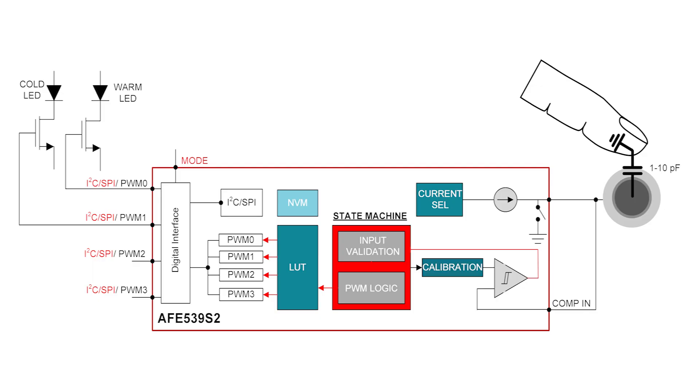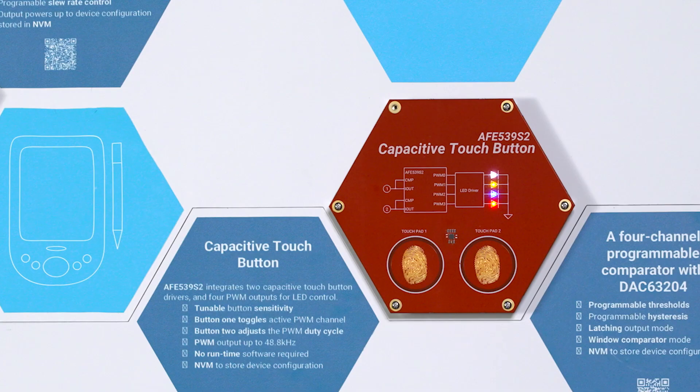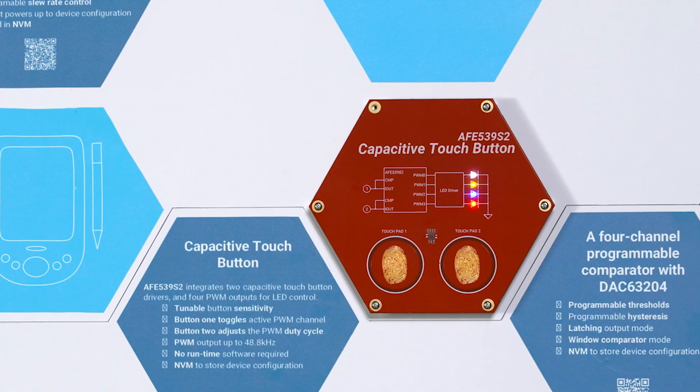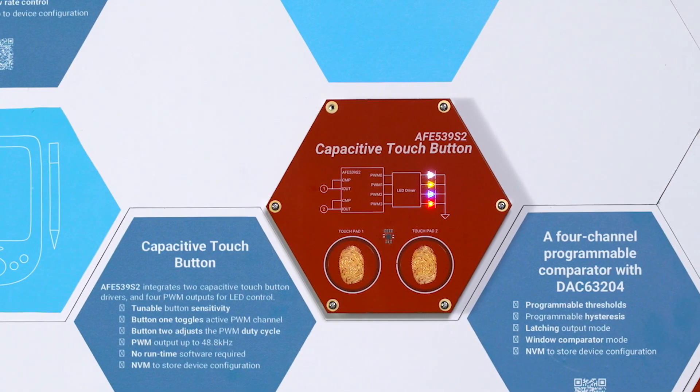Let's have a closer look at the device operation. In this demonstration, we will showcase two control schemes performed by two separate capacitive touch inputs to the AFE 539 S2, one to cycle between which LED is on, and another to adjust the brightness of the LEDs.